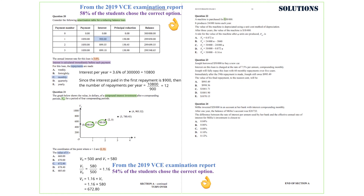Question 22. A machine is purchased for $30,000. It produces 24,000 items each year. The value of the machine is depreciated using a unit cost method of depreciation. After 3 years, the value of the machine is $18,480. The question is asking for a rule for the value of the machine after N units are produced, Vn. Since V0 equals 30,000 and V3 equals 18,480, the annual depreciation is equal to 30,000 minus 18,480, all divided by 3, and that is 3,840. The depreciation per item is equal to 3,840 divided by 24,000, and that is 0.16.